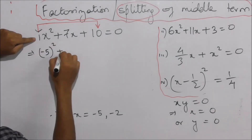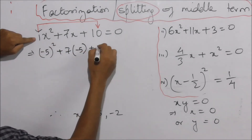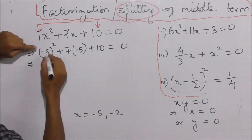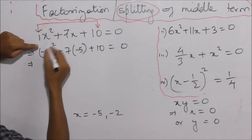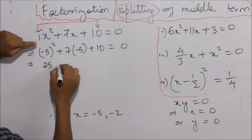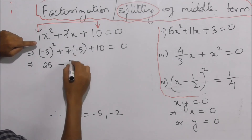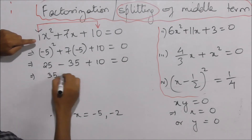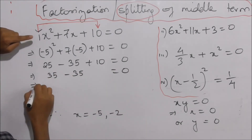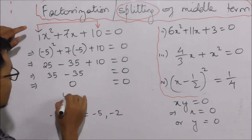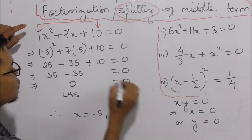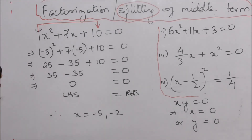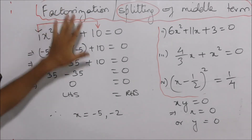So, substituting x equals minus 5: minus 5 squared plus 7 into minus 5 plus 10 is equal to 0. That gives 25 minus 35 plus 10 is equal to 0. 25 plus 10 is 35, so 35 minus 35 is equal to 0. The left hand side is equal to the right hand side.